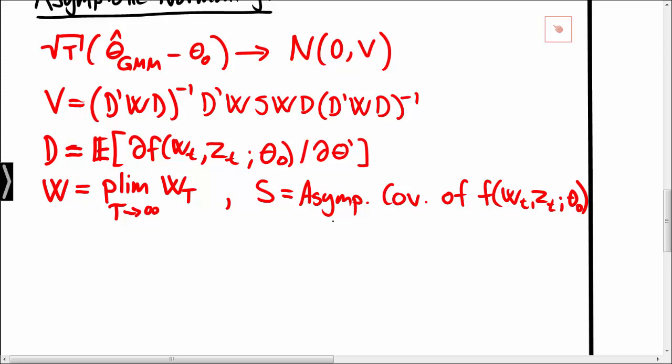It can be shown that if we choose the weight matrix W to be the inverse of the S matrix, then we have the smallest possible value of V and hence the smallest possible variance of the GMM estimator, and we say that the GMM estimator is efficient.